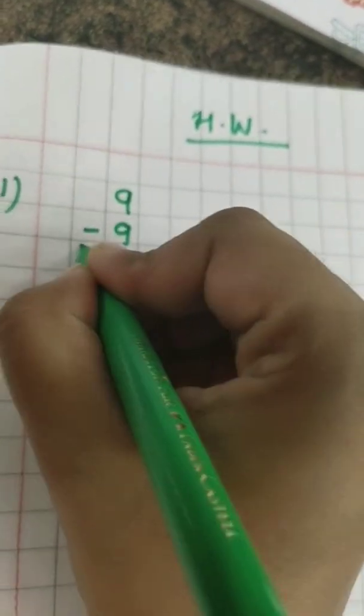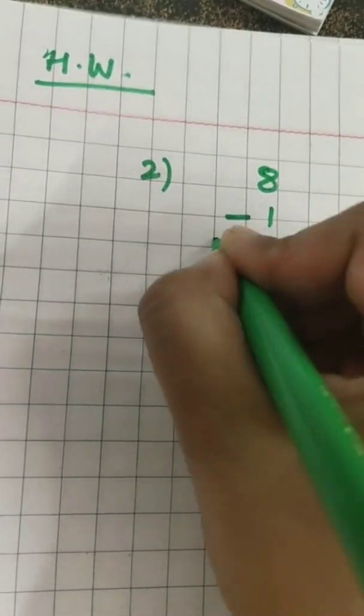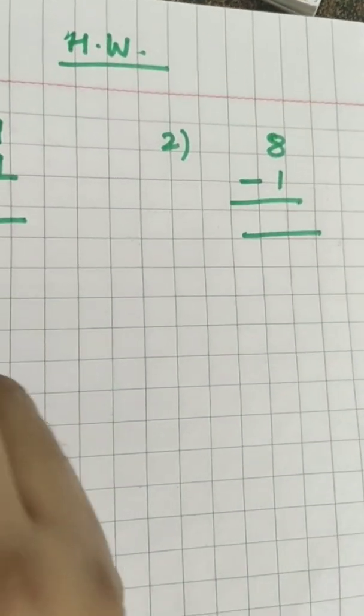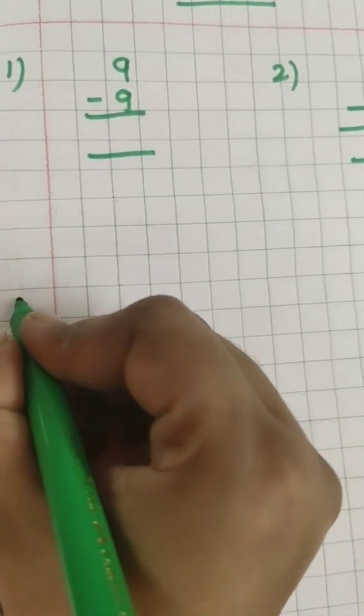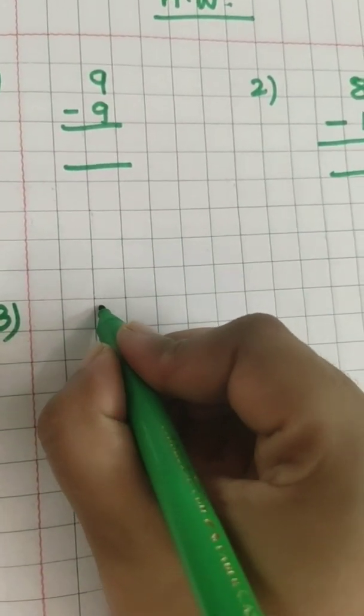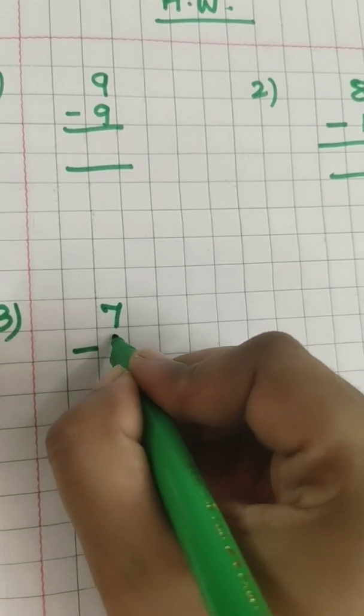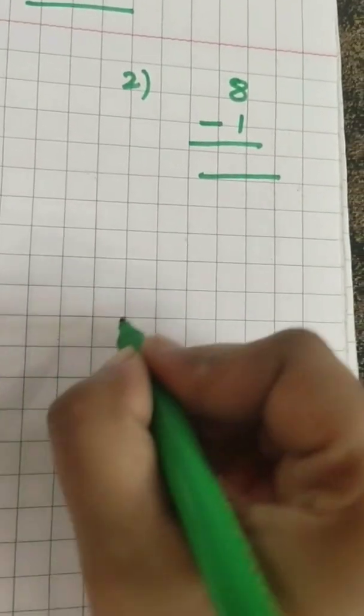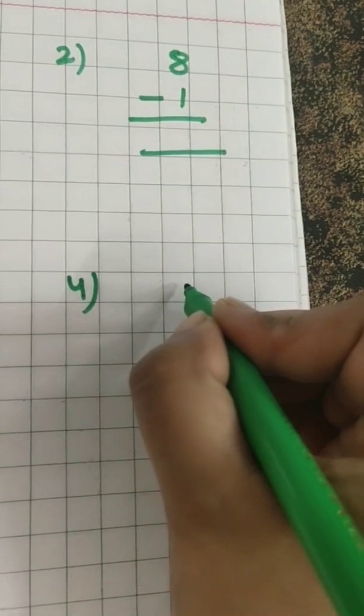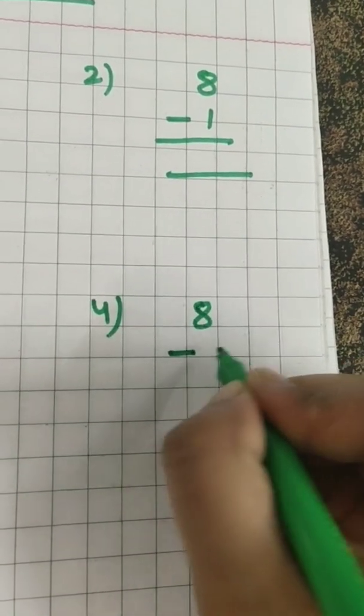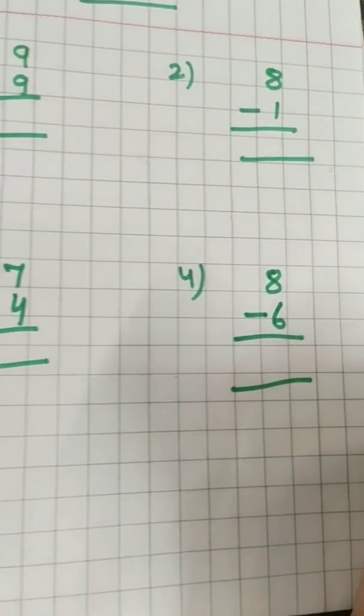And one homework also ma'am is going to give you. This homework ma'am is going to give you, just like that only. 9 minus 9 is equal to 0. Question number 2 is 8 minus 1 is equal to what? You have to find it out. Question number 3 is 7 minus 4. And question number 4 is 8 minus 6. Okay, children?